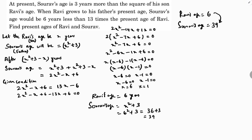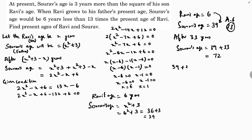The gap between their ages is clear — it's 33 years. After 39 minus 6 equals 33 years, Saurav's age will be 39 plus 33, which is 72. Verifying the condition: 13 times the present age of Ravi minus 6 equals 13 times 6 minus 6, which is 78 minus 6 equals 72. This confirms the answer. Therefore, Ravi's present age is 6 years and Saurav's present age is 39 years.